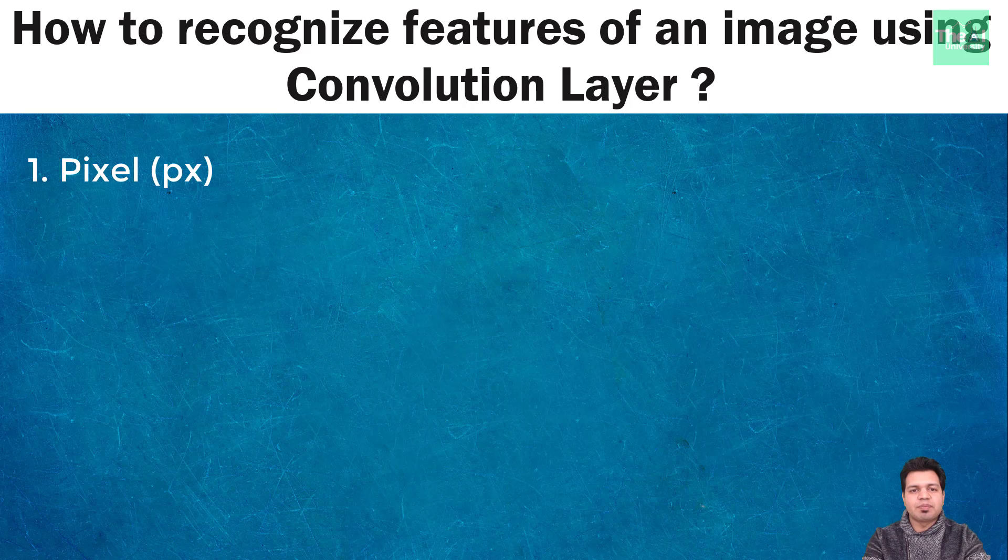So a pixel, also depicted as px, is the smallest portion of an image. It's a single point in the image and when these pixels group together, then it will make an entire image. Let's take an example.